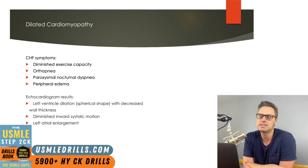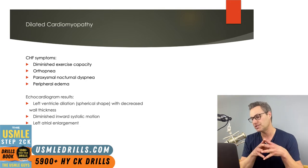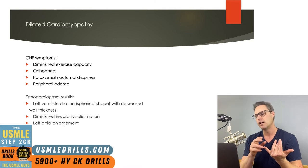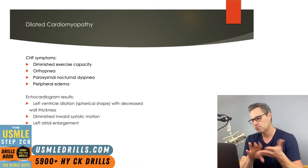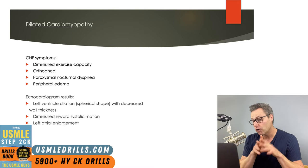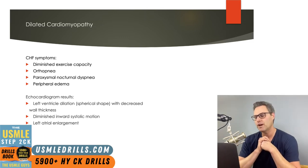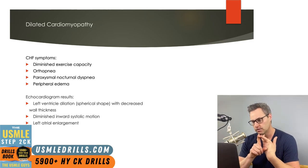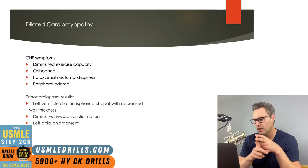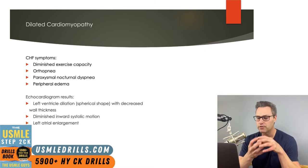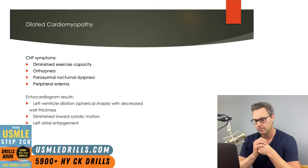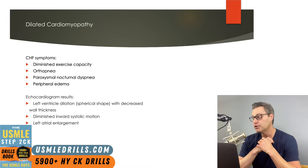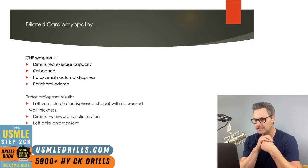In dilated cardiomyopathy, diminished contractility leads to worsened systolic function, so most commonly you'll see symptoms of CHF: shortness of breath, orthopnea, and peripheral edema. On echo, you can expect dilation and a change in shape to a more spherical ventricle rather than the normal elongated ovoid shape. The ventricular wall may be reduced in thickness with reduced inward motion during systole. In some cases the left atrium may also be dilated.